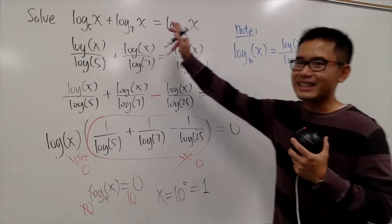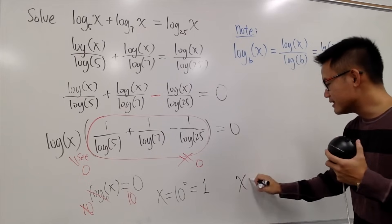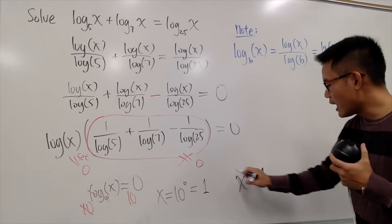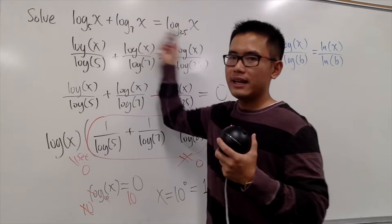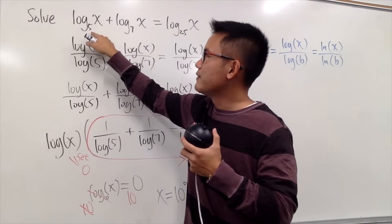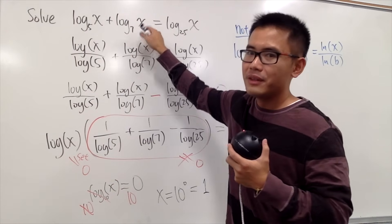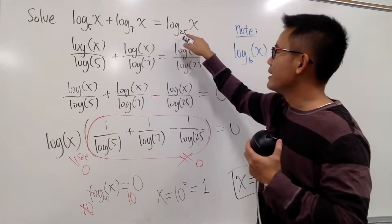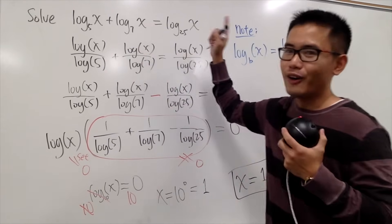So, in fact, the answer to this right here, it's pretty trivial, in the sense that x is equal to 1. And, when you plug in 1 into all the x, in fact, log base 5 of 1 is 0. Log base 7 of 1 is 0. Log base 25 of 1 is 0. 0 plus 0 is, of course, 0.